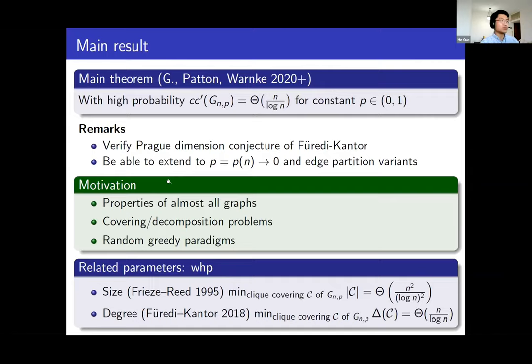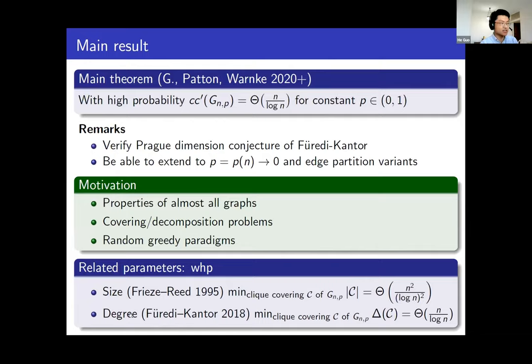What is the motivation for studying this problem? When p equals one half, this result implies that the clique chromatic number and proc dimension of G(n,p) is roughly n over log n for almost all graphs. A second motivation is the relation to covering and decomposition problems. For example, Frieze and Reding in 1995 determined that the minimum size of a clique covering of G(n,p) is roughly a certain quantity with high probability.